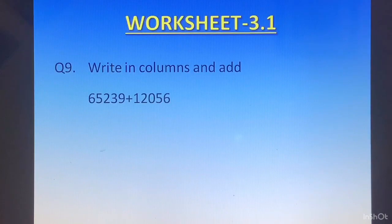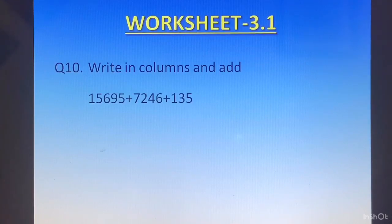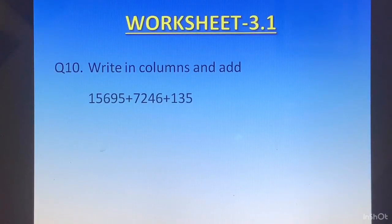First, you will write the place values. Then, starting from the right, write the numbers ensuring the ones digit of each number is in the ones column and the tens digit of each number is in the tens column, and likewise for all place values. Then you will add and get the answer. Question 10: Write in columns and add — 15695 plus 7246 plus 135. Here the numbers are of different number of digits: the first is 5 digits, the second is 4 digits, and the third is 3 digits. So be very careful to write in columns. Put the place values on top and make sure you start writing all numbers from the ones column, and you will not go wrong.